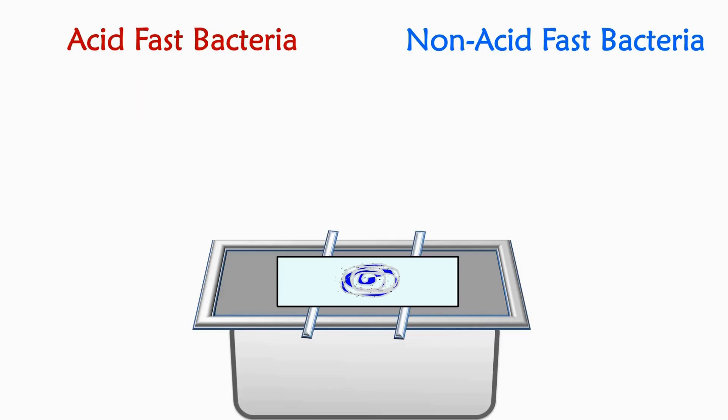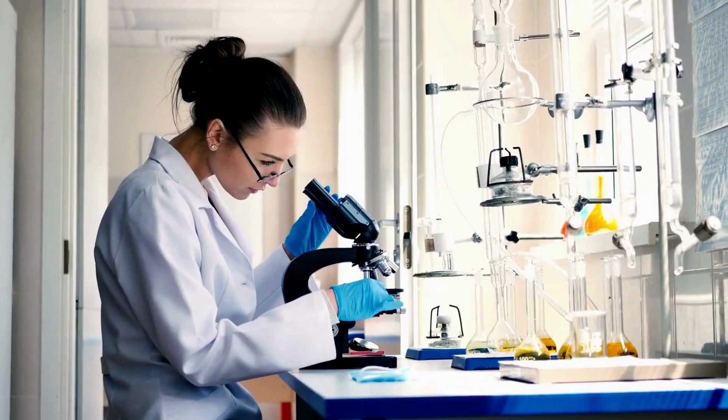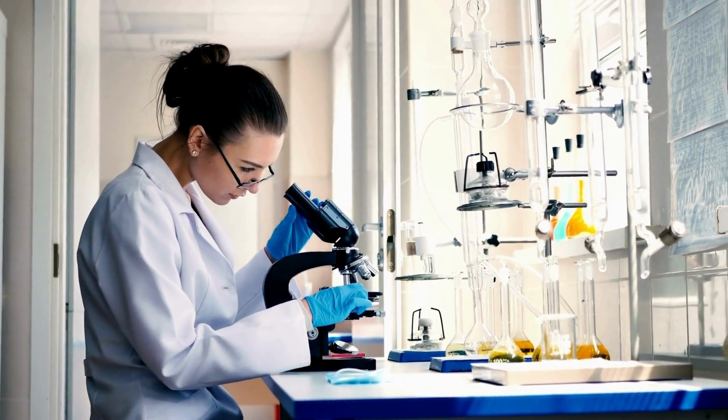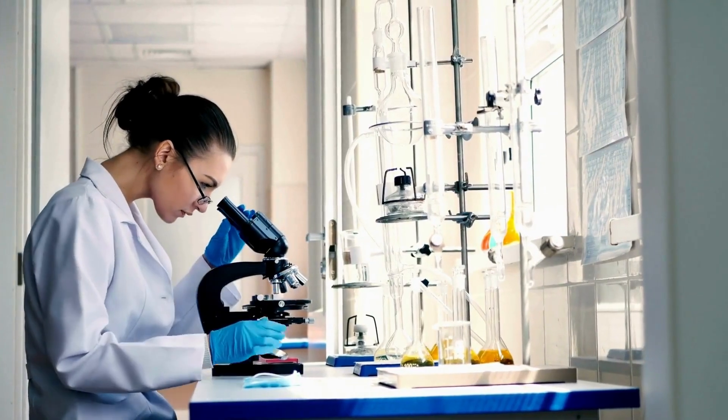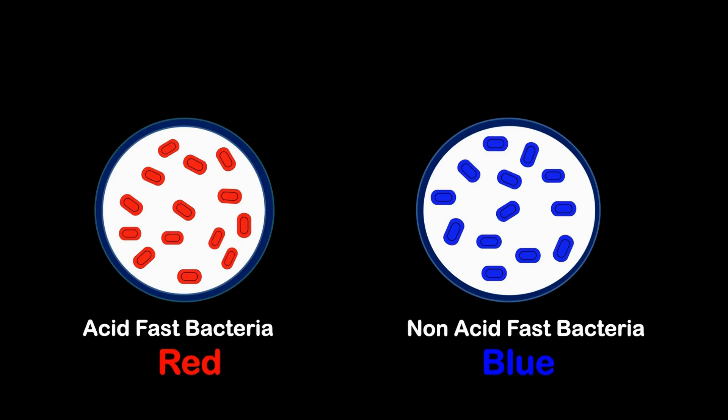After washing, lift the slide with the stained smear and allow it to air dry for a few minutes. The next step is observation of the stained smear under the bright-field microscope. Keep the slide on the microscope and observe the smear under a 100x oil-immersion lens. After acid-fast staining, acid-fast bacteria will appear red in color whereas non-acid-fast bacteria will appear blue in color.